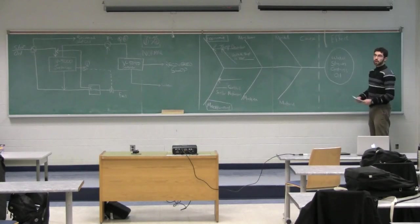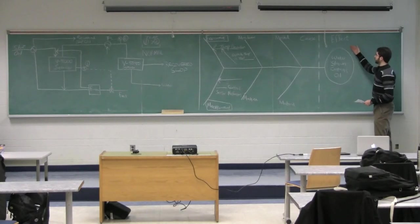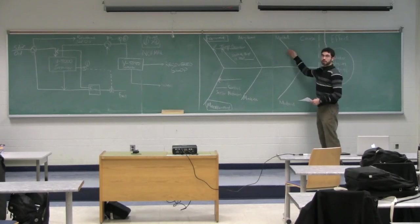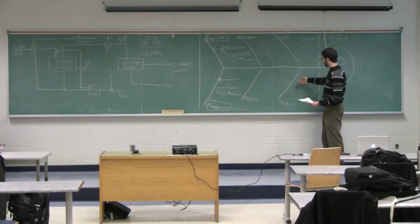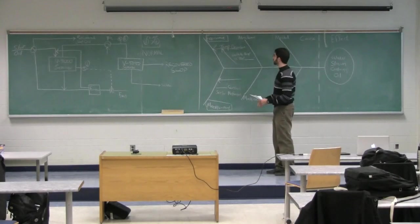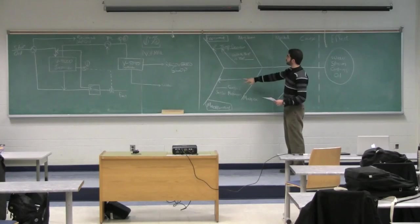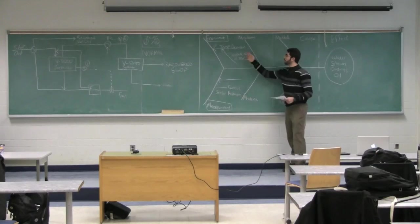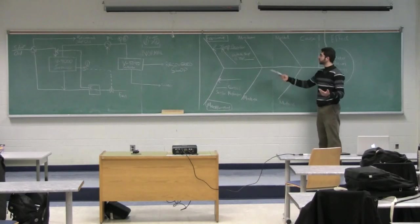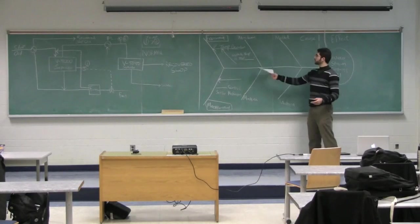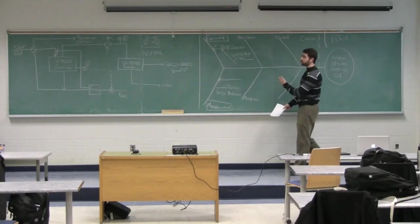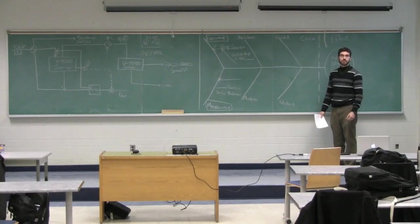To root cause the problem, we used the fishbone diagram. We have our effect on the right side: the water stream contains oil, and we have our causes here. There could be many other causes we have to brainstorm, such as method, material, machine. It could be man or human error, environment, and measurement. Because of time, we're going to focus on environment and measurement. One root cause could be temperature deviation from the environment outside. Anyone like to brainstorm? Outside temperature is too... what do you think would be a root cause?